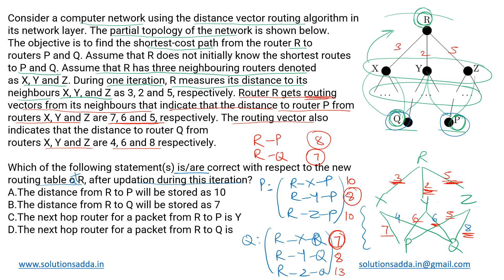So now the routing table of R will be updated. Its distance to P will be updated to 8 and R to Q will be updated to 7.